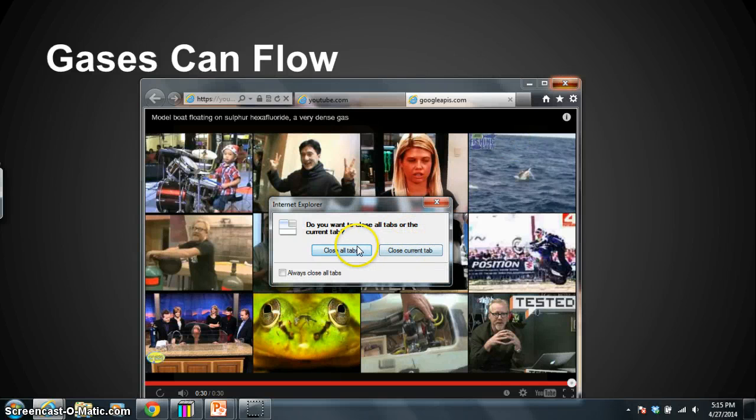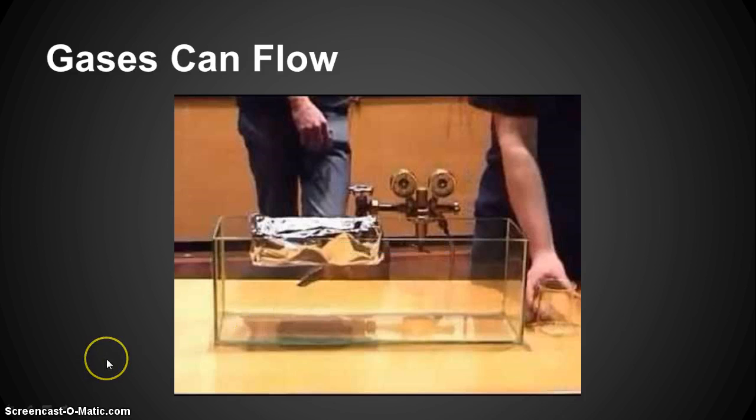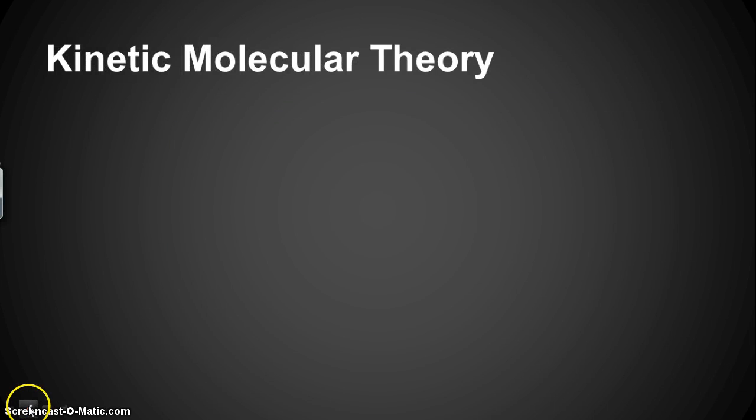All right, so those are the basic properties of gases, but we need to explain what causes those properties of gases. So what explains all four of those properties is this thing called the kinetic molecular theory. The word kinetic means to move. The word molecular means having to do with molecules. And if you remember from unit one in chemistry, a theory is an explanation. And so instead of calling this the kinetic molecular theory, we could call it the moving molecule explanation. By the way, we oftentimes abbreviate kinetic molecular theory with KMT.